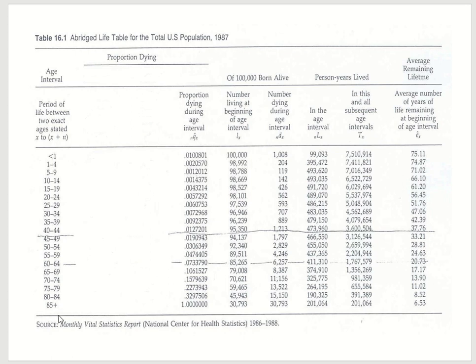The next thing you need is the age-specific death rate — what proportion, what percentage of people would die in that age-specific category. These will be provided as well, or you can get them from the Bureau of Census or the Ministry of Health.